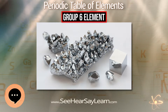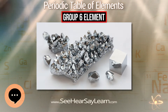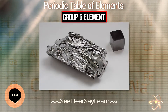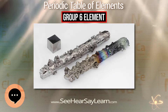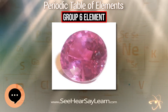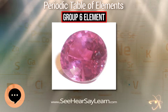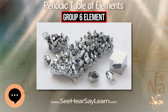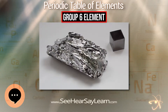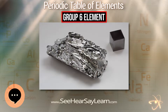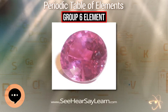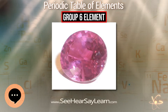Molybdenite, the principal ore from which molybdenum is now extracted, was previously known as molybdena, which was confused with and often used as though it were graphite. Like graphite, molybdenite can be used to blacken a surface or as a solid lubricant. Even when molybdena was distinguishable from graphite, it was still confused with galena, which took its name from the ancient Greek word molybdos, meaning lead. It was not until 1778 that Swedish chemist Carl Wilhelm Scheele realized that molybdena was neither graphite nor lead.